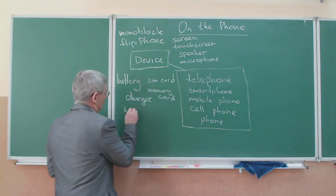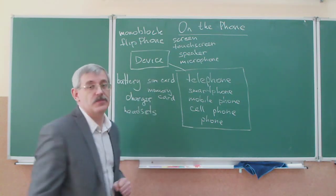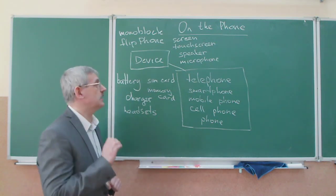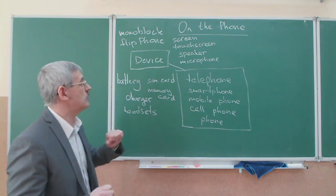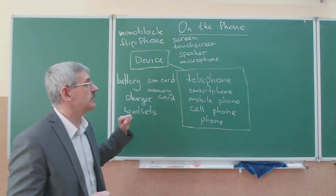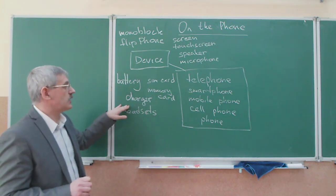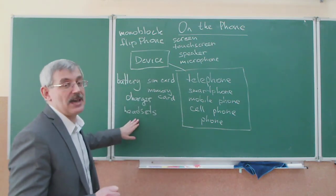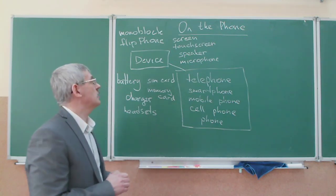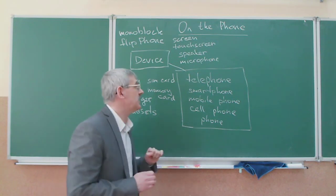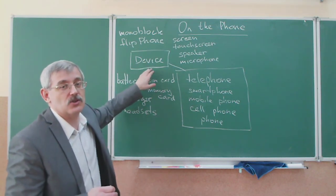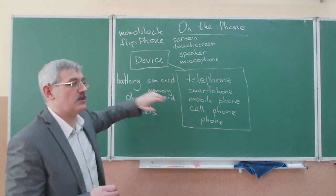So when we are talking about things and trying to learn new words, we should group them by logical fields. As a device, a telephone is a monoblock or a flip phone. It has a screen or touch screen, a speaker, a microphone, a battery, a charger, a SIM card, a memory card, and headsets. Note that all of these words are nouns.